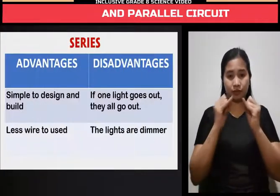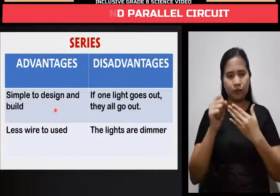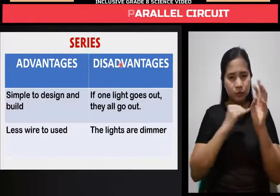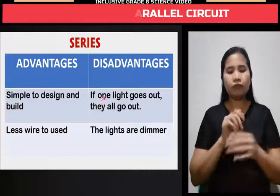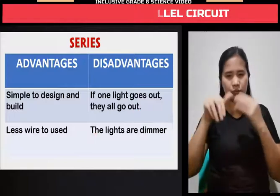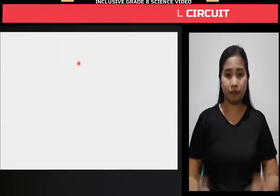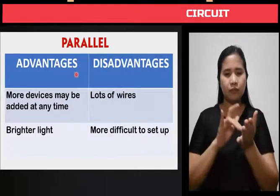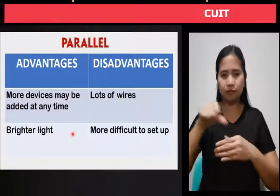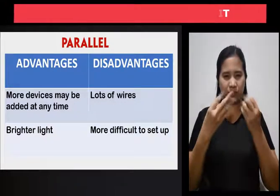In series, the advantages are: Number 1, simple to design and build; Number 2, less wire to use. The disadvantage: if one light goes out, they all go out. For parallel, the advantages are: more devices may be added at any time, and brighter light. The disadvantages: lots of wire, and more difficult to set up.